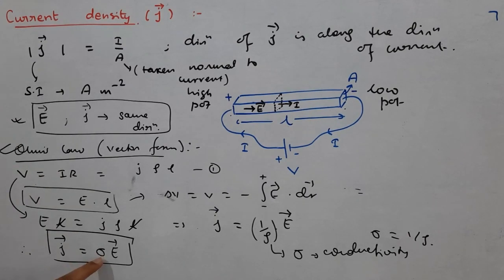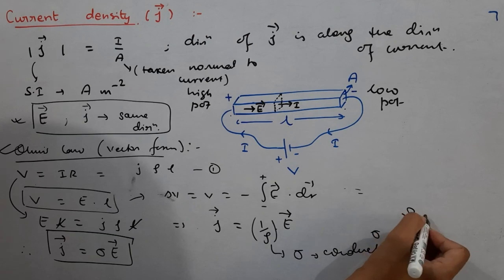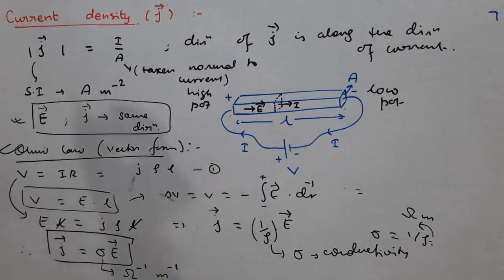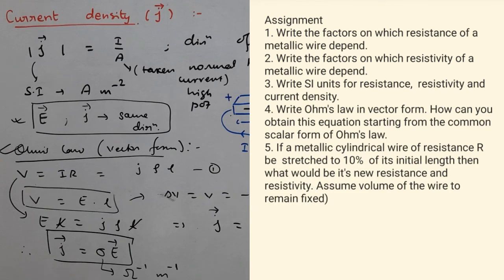The SI unit for sigma: since it is the reciprocal of resistivity whose SI unit is ohm·meter, sigma has SI unit of 1/(ohm·meter), which can also be written in terms of siemens per meter. In the next class we will proceed further with the concept of drift of electrons inside a conductor, and after that we will start series and parallel combination of resistors. So till then goodbye, take care, read well.